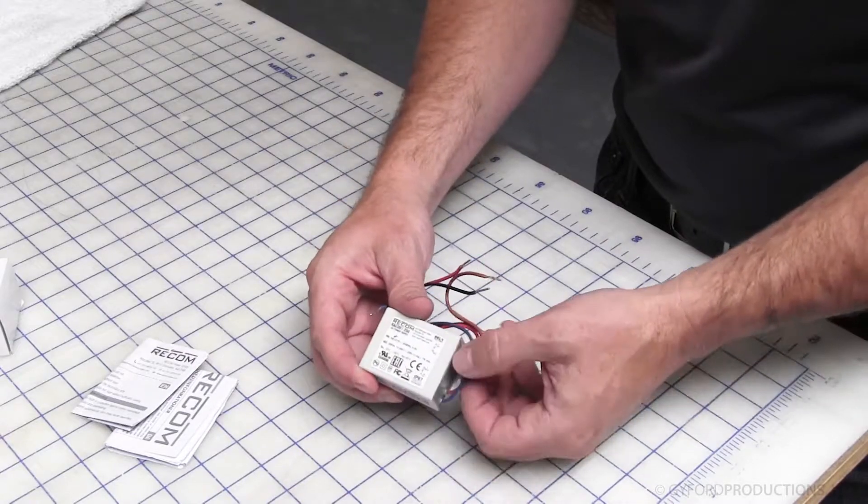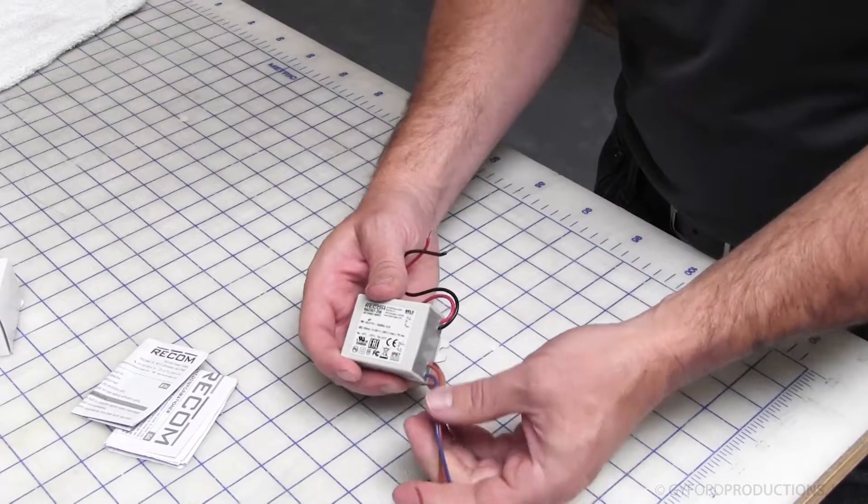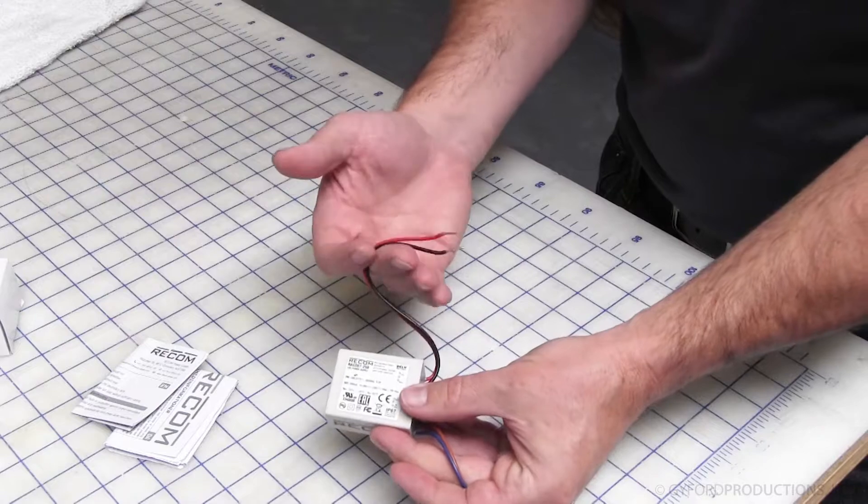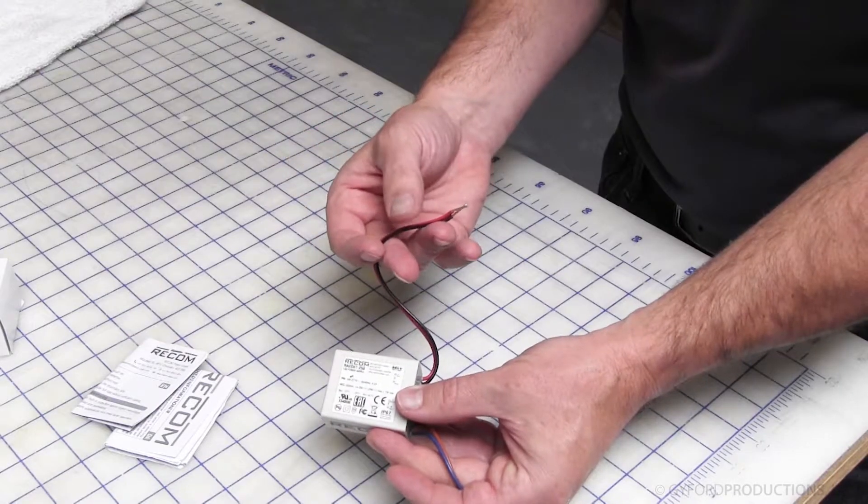This power driver has neutral and load wires coming in to step power down to 24 volts at 7 watts. Positive and negative wires go out to the corresponding LED wires.